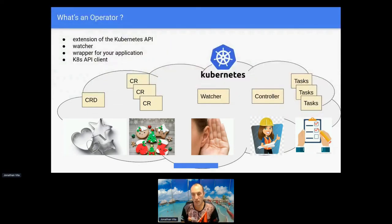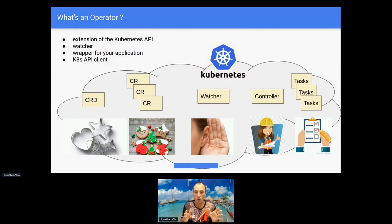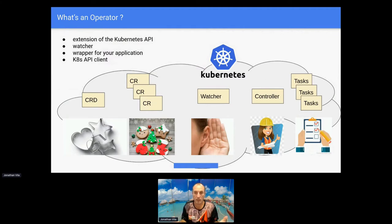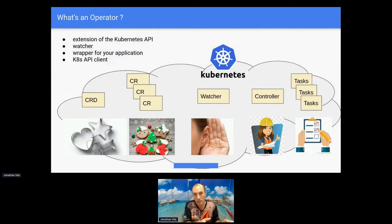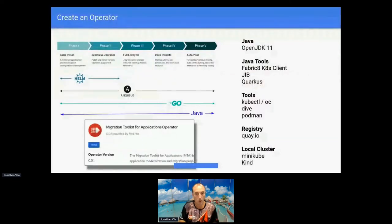Then we have a controller that says: now we have these events, these changes on these objects, and I need to do some tasks. The user has said 'I want one video club in New York with three stores,' so the controller checks how many stores are already there - if there's one, it needs to add two more; if there are four, it needs to close one down. In the world of operators we call this 'desired state' and 'real state' - the real state is always compared to the desired state, and the controller does the tasks that will move the current state into the desired state.